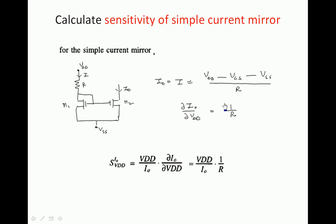Taking the differentiation of this expression with respect to VDD — VGS and VSS are constant — the result is simply 1/R. Therefore, S(I_out, VDD) = (VDD / I_out) × (∂I_out / ∂VDD) = (VDD / I_out) × (1/R). This is the expression for the sensitivity of the simple current mirror.